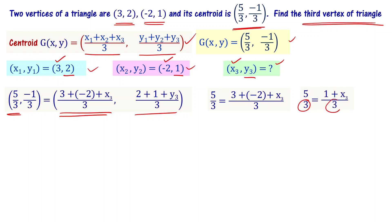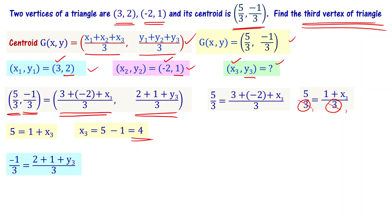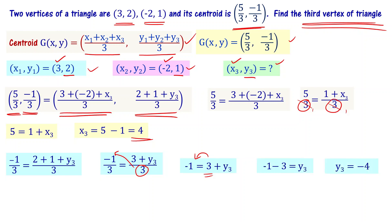The denominators on both sides cancel. So 5 equals 1 plus x3, and x3 equals 5 minus 1, which is equal to 4. For the y-coordinate, similarly solving gives y3 equal to minus 4. Now we have the coordinates of both x3 and y3. So the third vertex of the triangle x3 comma y3 is 4 comma minus 4.